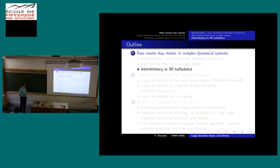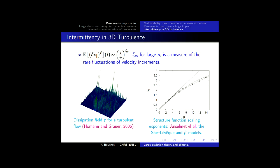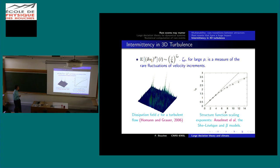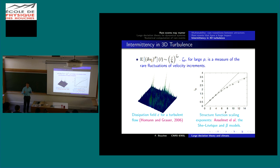Large deviation theory was actually introduced in turbulence long ago, related to intermittency in three-dimensional turbulence. This picture from Oman and Grauer shows the dissipation rate in a turbulent flow — a two-dimensional cut of a three-dimensional flow where colors indicate intensity of dissipation. The dissipation is not homogeneous but occurs through very localized and inhomogeneous spikes. This is what is called intermittency in three-dimensional turbulence.